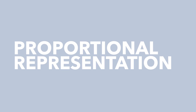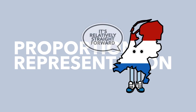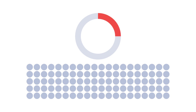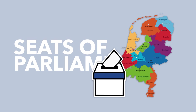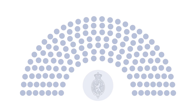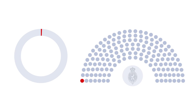Proportional representation, the system used by the Dutch, is on the surface a relatively straightforward system. Essentially, if a party receives 25% of the votes in the country, they get 25% of the seats. Seats of Parliament are therefore not assigned to a specific region or particular part of the electorate. To get one, all you need is enough votes from the electorate as a whole. For example, the Dutch lower house has 150 seats. To win one of them, you therefore need one 150th of the votes cast. That's it.